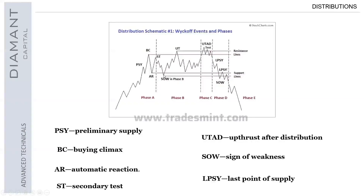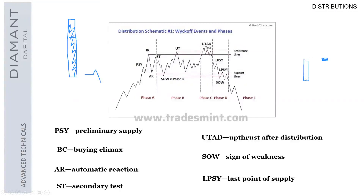Once this happens you start to see a sign of weakness in phase B, which may be a slight break of structure down. The issue with this is once you get that break of structure you're still within this point of interest — your point of interest might be this big for example, or even further than that. This sign of weakness may not be strong; it could be a strong one that blows past the AR and PSY, or it can simply just be a wick, which is what we would see as a liquidity grab.